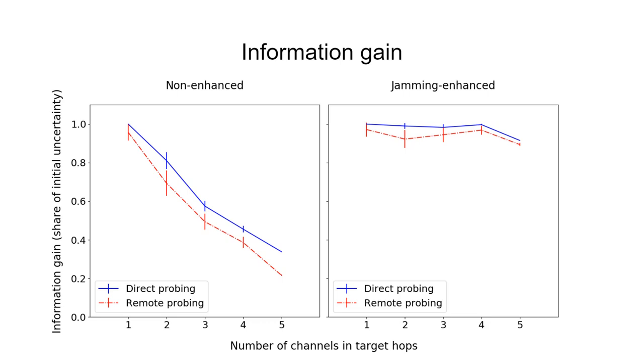So the attacker doesn't get as much information in multi-channel hops as in single-channel hops. In contrast, with jamming-enhanced probing, the final information gain remains high as we increase the number of channels in the target hop.